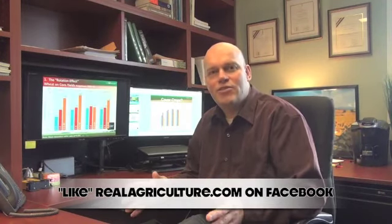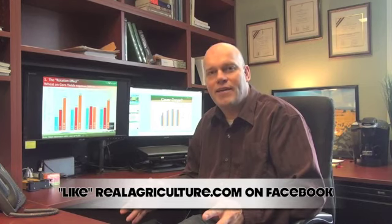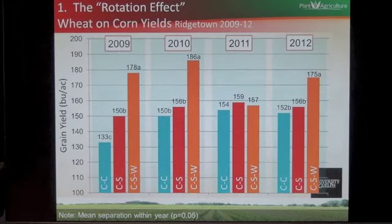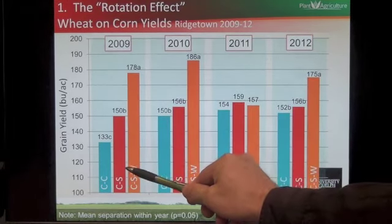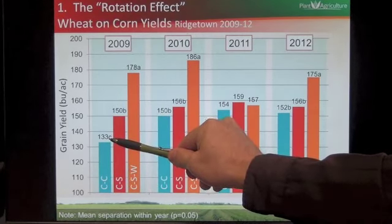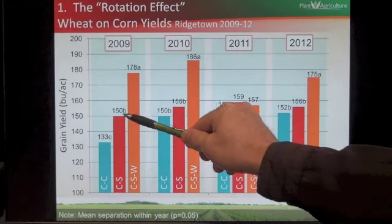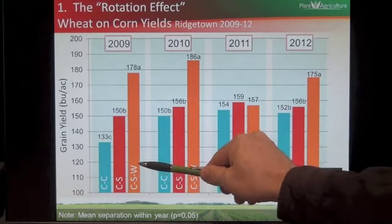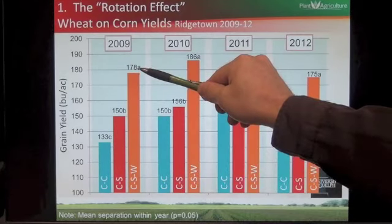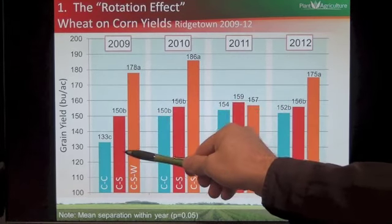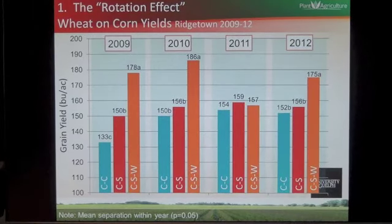In the past five years, we have some good, solid data on how wheat in the rotation improves both corn and soybean yields. So let's take a look at some of the data. Here we have the past four years at Ridgetown. Let's focus on 2009 — this is continuous corn at 133 bushels to the acre. In the corn-soybean rotation, we have 150 bushels to the acre. And when we include wheat in that corn-soybean rotation, yields go all the way up to 178 bushels to the acre. So the story in 2009 was that including wheat in a corn-soybean rotation increased corn yields by 28 bushels to the acre.